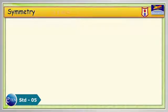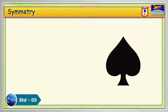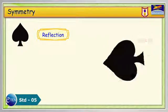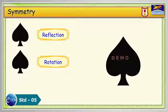The three basic kinds of two-dimensional symmetry are reflection, rotation, and translation.